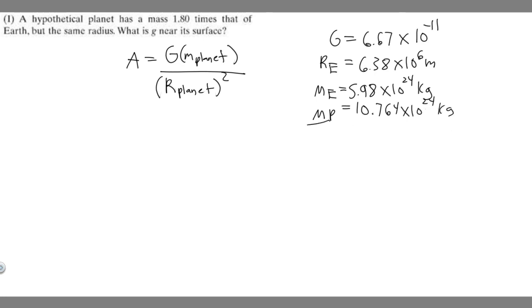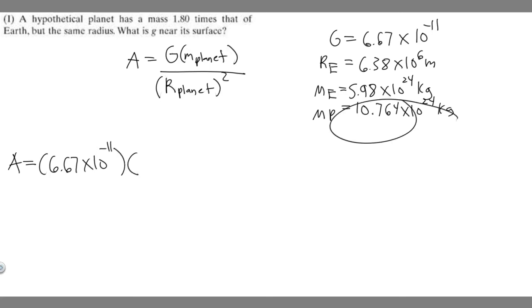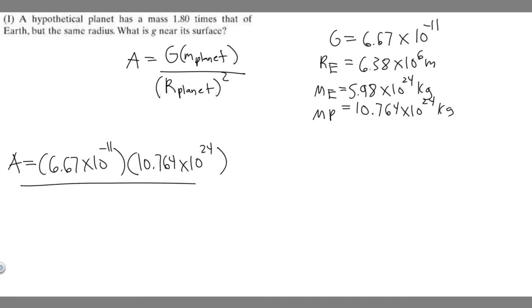This is the mass of our planet. We have the mass of our planet, we have the radius — which is the same as Earth's — and we have G. So what we do is just plug it all in and solve. G on top: 6.67 times 10 to the minus 11, multiplied by the mass of our planet, which is 10.764 times 10 to the 24, and then we divide by the radius of our planet — which is the same as Earth — 6.38 times 10 to the 6th, squared.